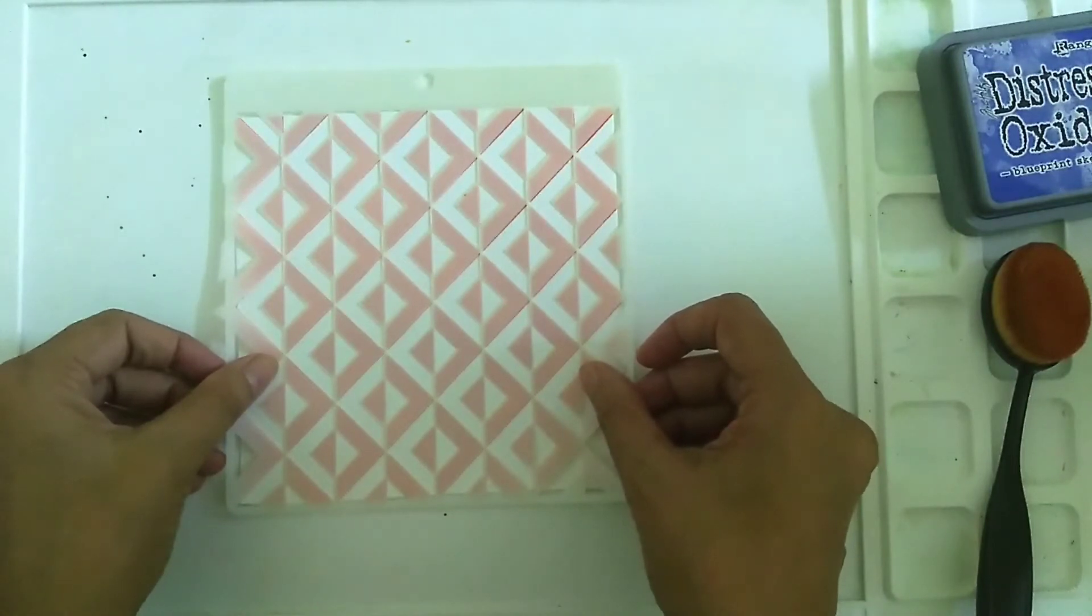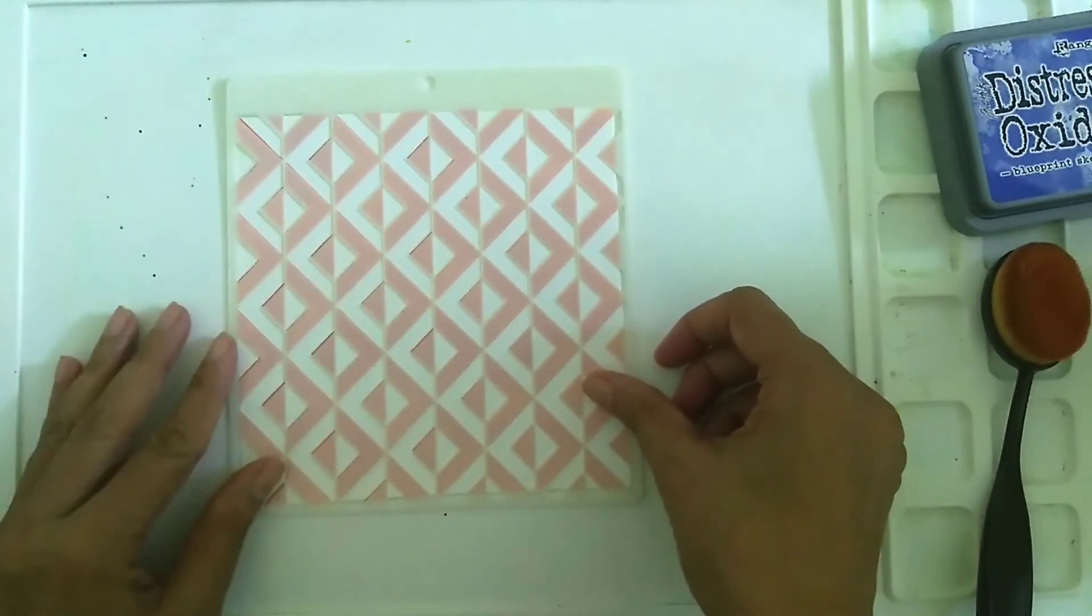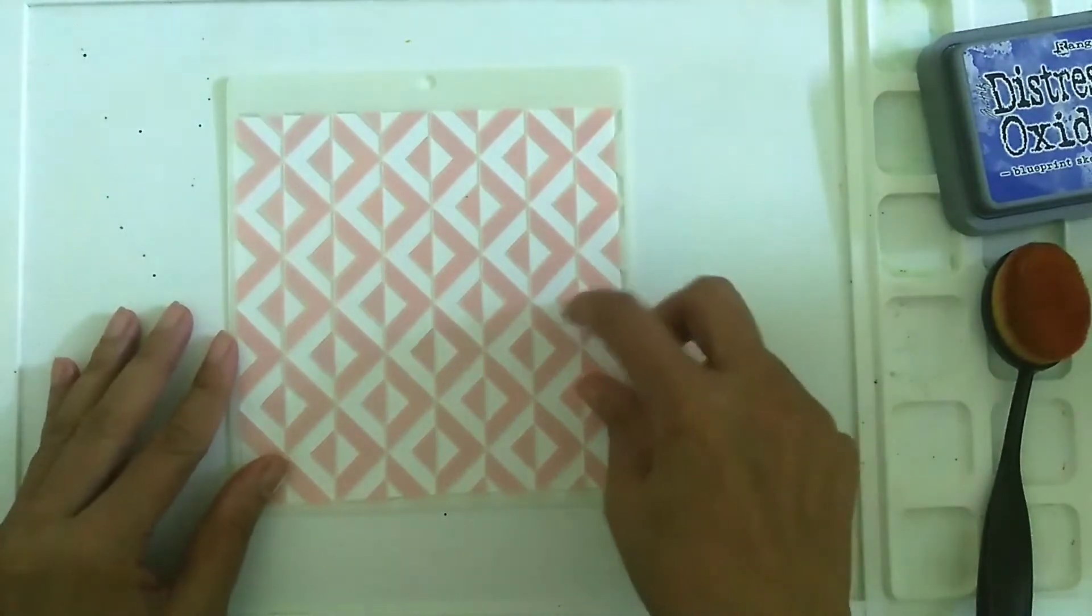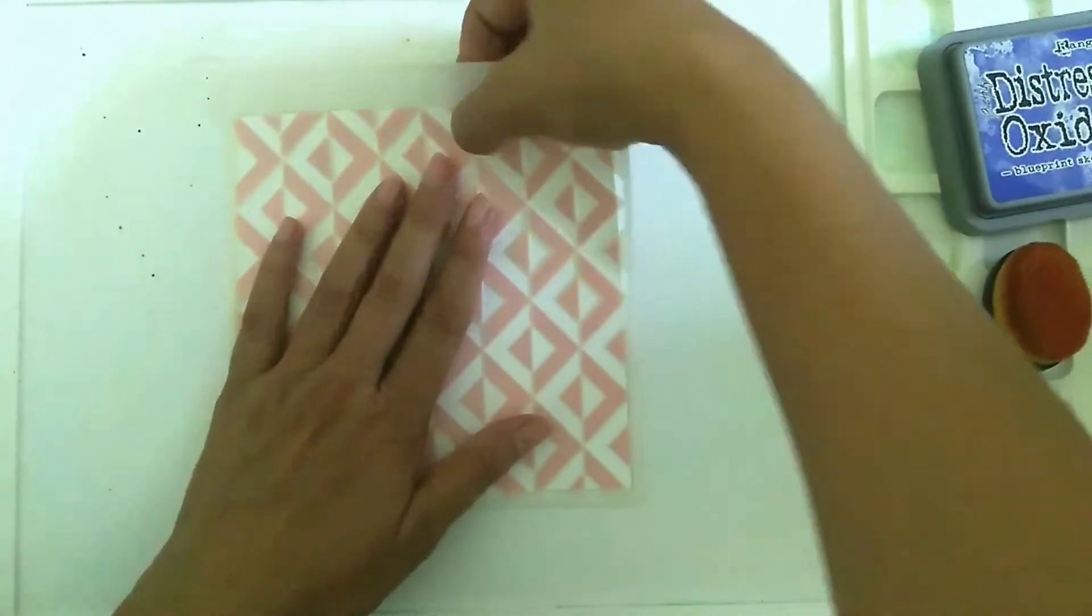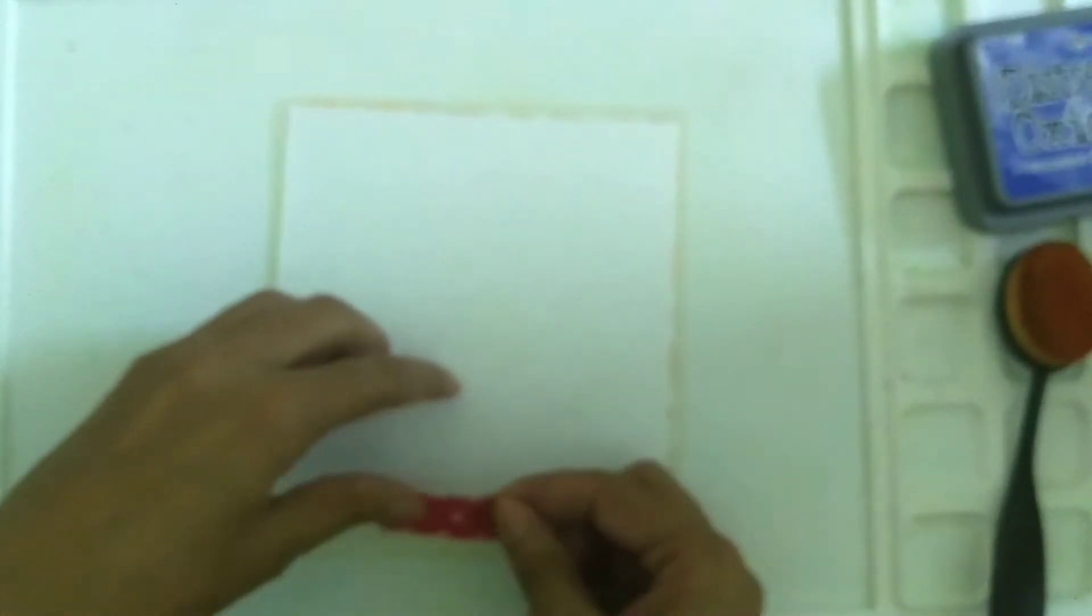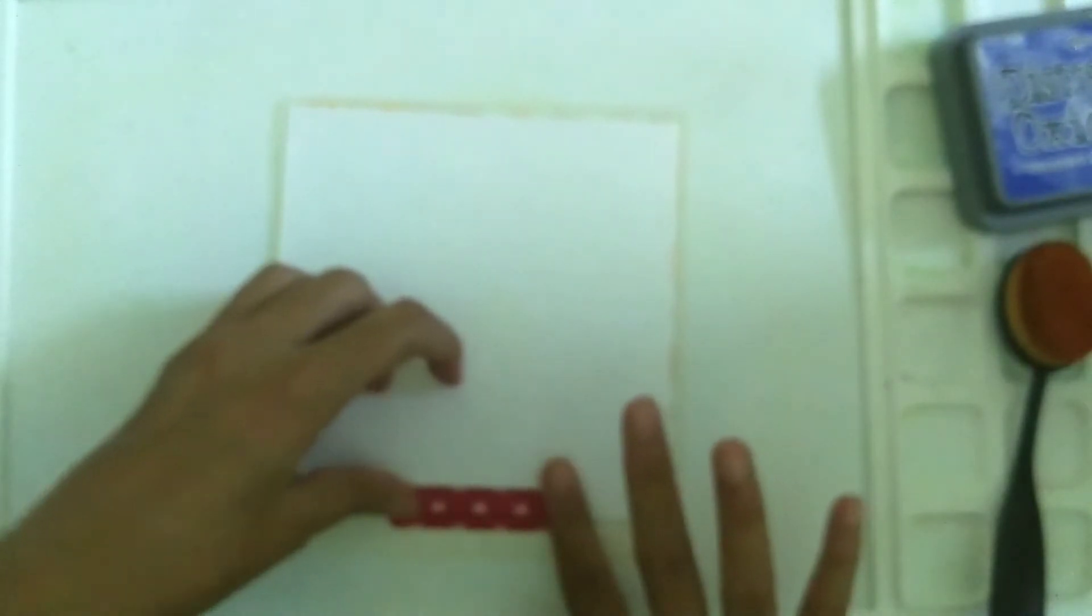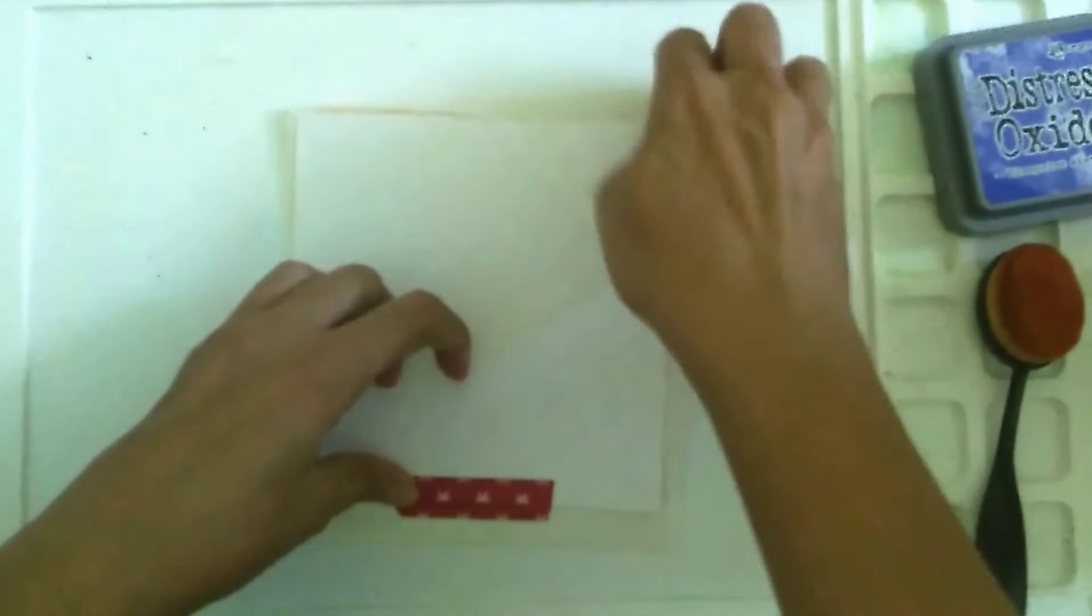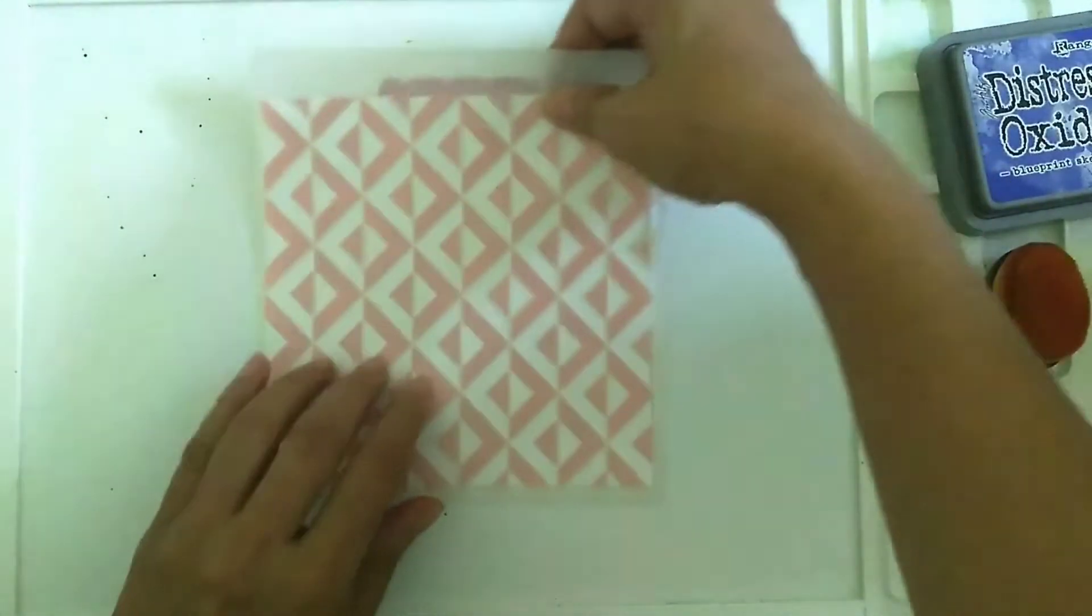This is the very special thing about this stencil - it gives a very 3D effect. Depending on the kind of background you want, you can either go very subtle with colors which are close to each other in shade, or the way I'm doing it, you can use contrasting colors and create a bold background. So now again I'm placing the piece of washi tape behind the stencil so that it is fixed in place.